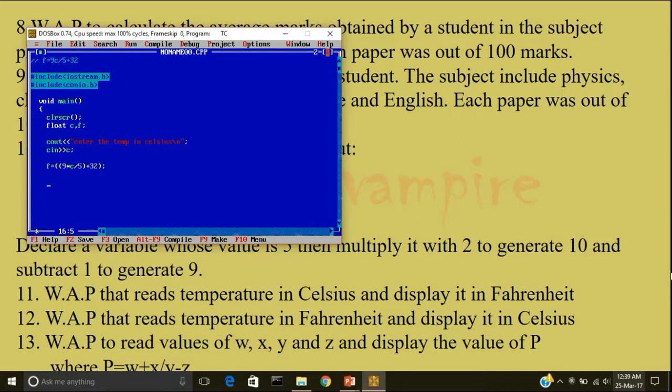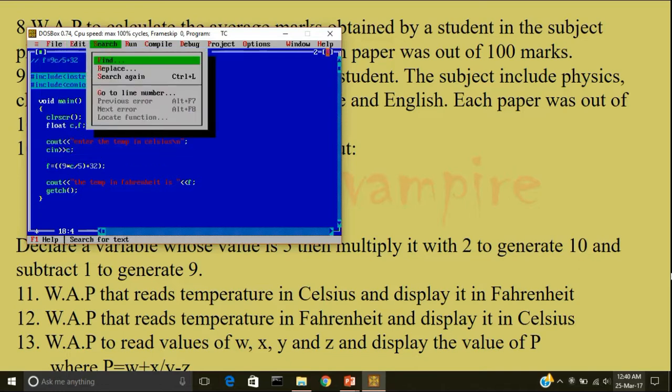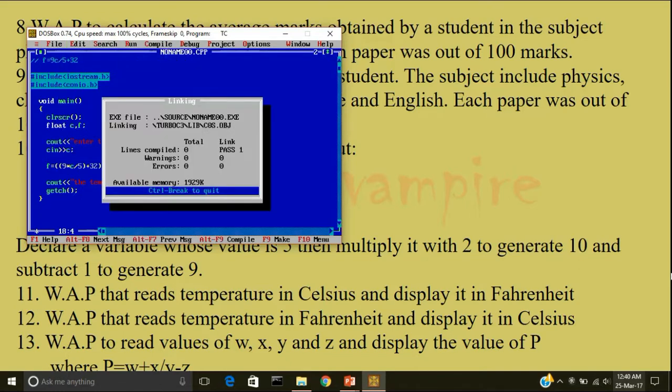Now, I'll display the temperature. cout the temperature in Fahrenheit is less than less than f. getch. I'll close the program. Compile. Run.